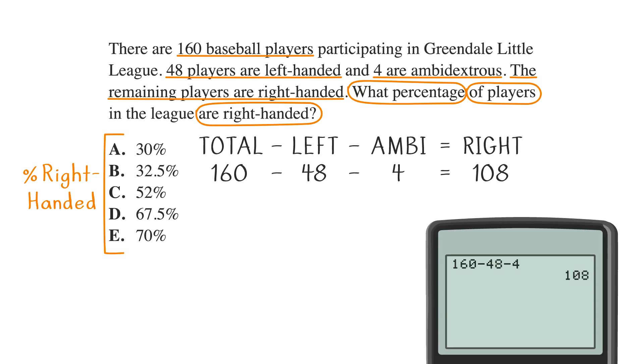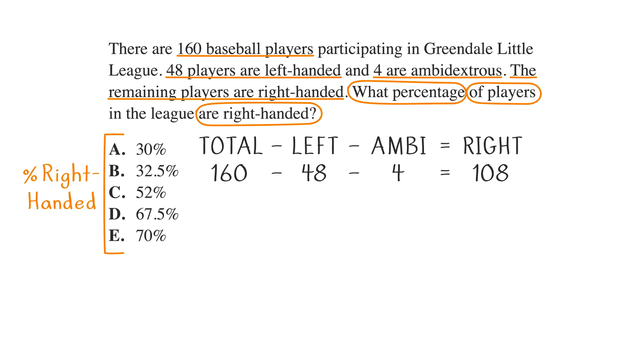Now that we know we have 108 right-handed players, let's go through the problem word by word and translate it into an equation. The question starts with what percentage? That's our cue to write P over 100.